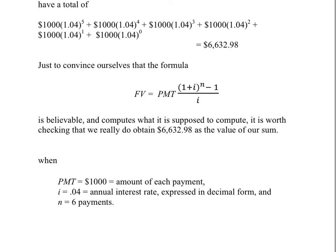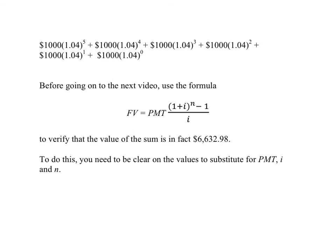Now, let's convince ourselves that this formula actually computes the right value. Here, PMT, the regular payment, is $1,000. i, the annual interest rate in decimal form, is 0.04. That occurs in two locations in the formula. And n, the number of payments, that's 6 payments. That's just information that we're told at the beginning of the problem. Before going on to the next video, use the formula for the future value of a fixed deferred annuity to verify that the value of the sum, of this sum, is in fact $6,632.98, as we computed the hard way earlier.